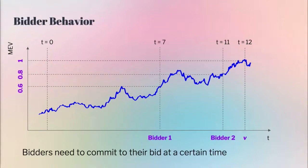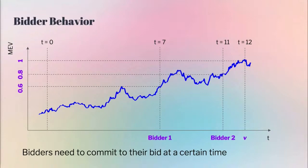Let's say there's bidder 1 and bidder 2. Bidder 2 commits to their block at a much later time — maybe they have better latency, they're faster — meaning they're closer to the actual value. Bidder 1 has to commit way earlier at T7, where they're not very sure about the actual value. From here we can already intuitively see that bidder 2 has an advantage and will probably make some profit, but we'll go into some cases where this might not be true later.